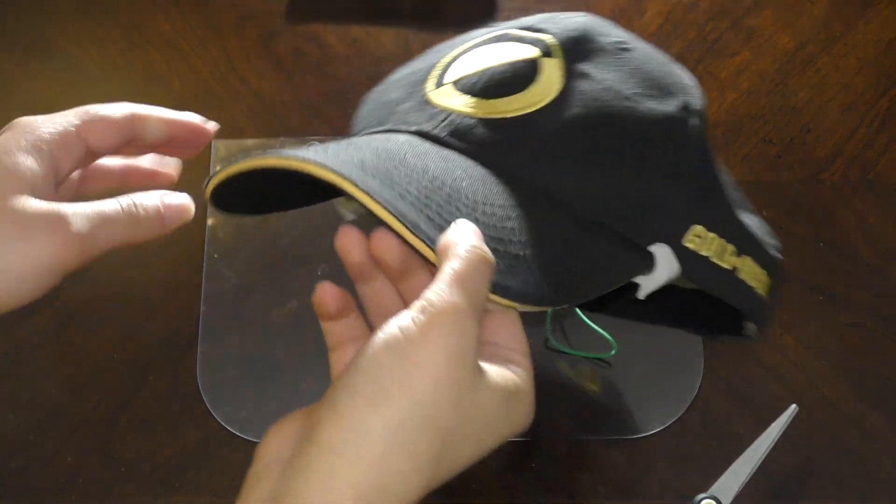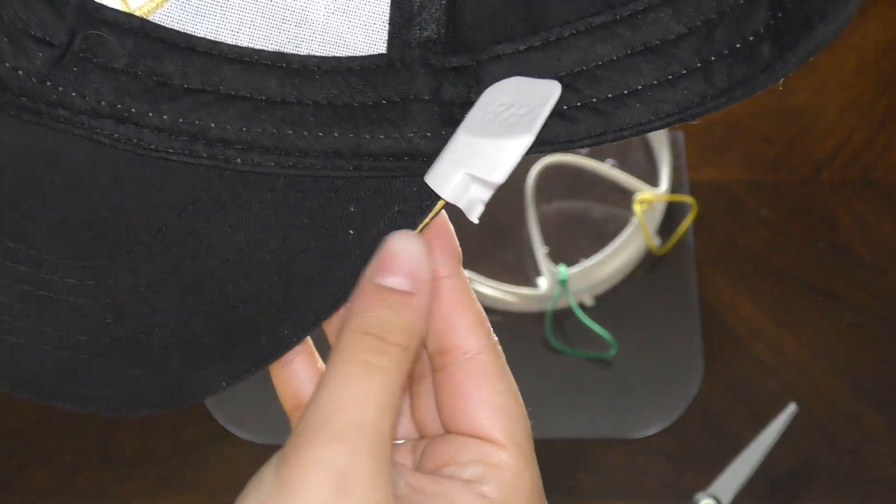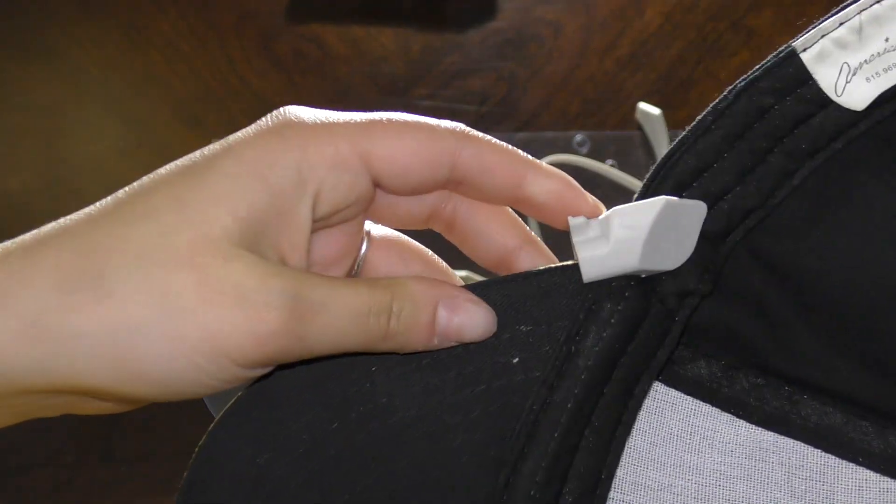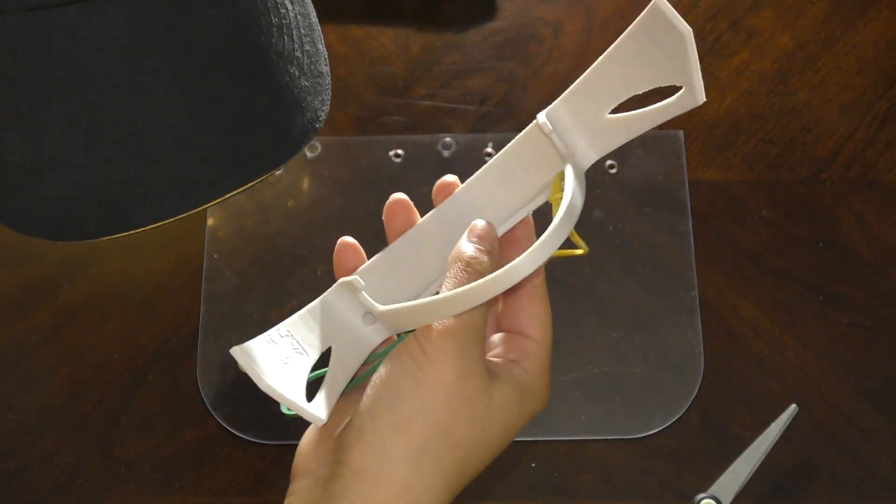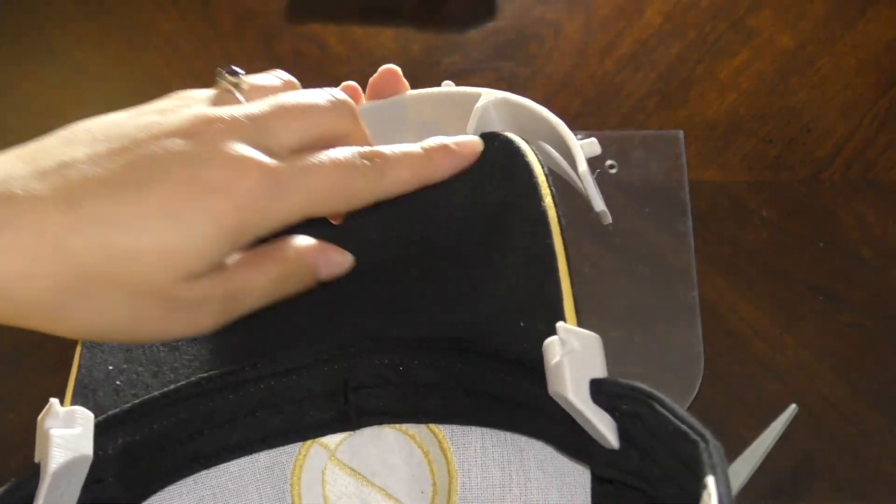Next take your hat and notice the hooks on the bottom. This is where you're going to attach your elastic bands to secure the base to the hat. Put the edge of the hat between the hooks on the bottom of the piece and the security part on the top of it.